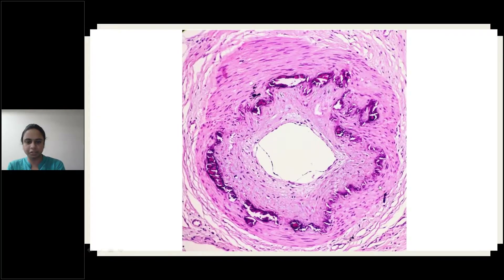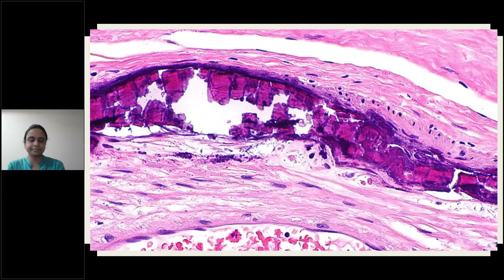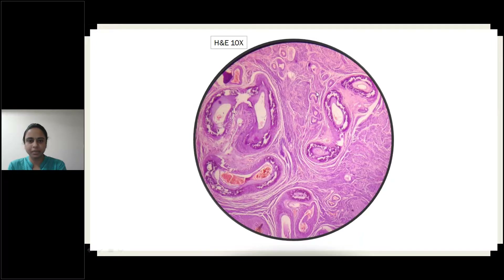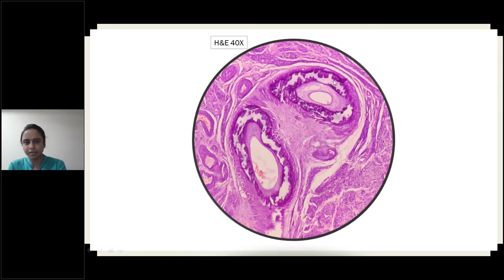You can see the dystrophic calcified deposits in the tunica media. There is no inflammation, the lumen is normal, and the intima and adventitia are normal. Refractile material is seen — acellular, refractile, granular, mostly basophilic in H&E stain. You can see the arteries that are involved. This is low power 10x, and this is 40x high power — you can see the media involved with calcified deposition.